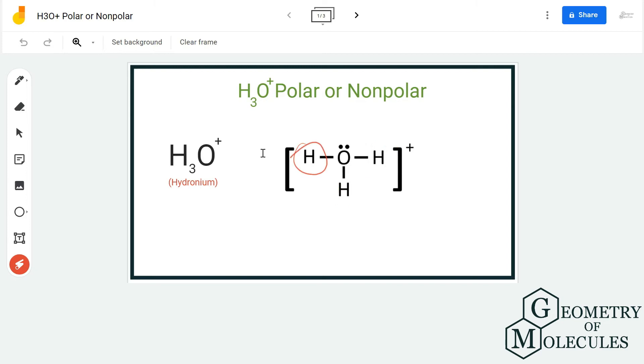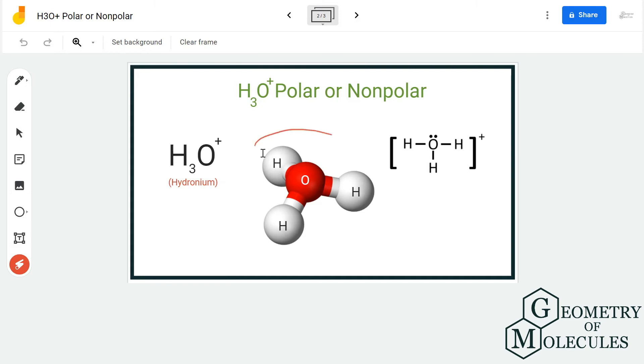If you look at its structure in 3D, you can see that this molecule is not linear, it is a little bent, and there is one lone pair of electrons present on the oxygen atom. Generally, molecules in which the central atom has lone pairs are polar.